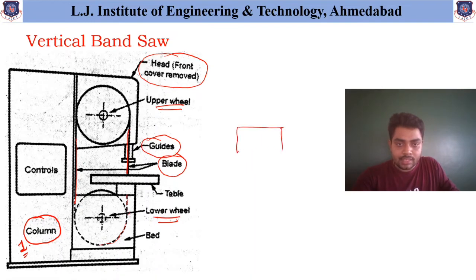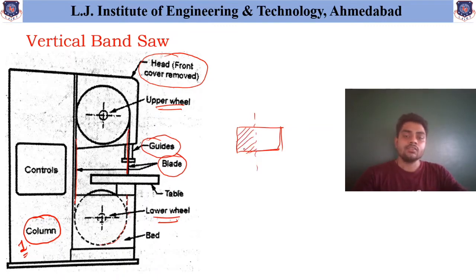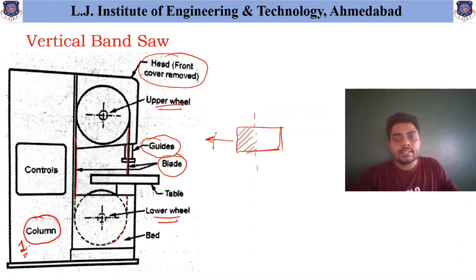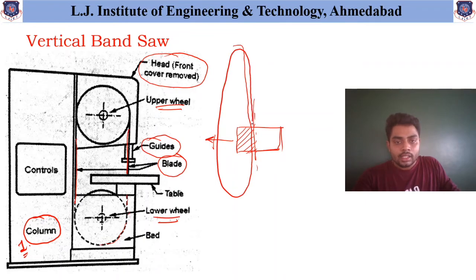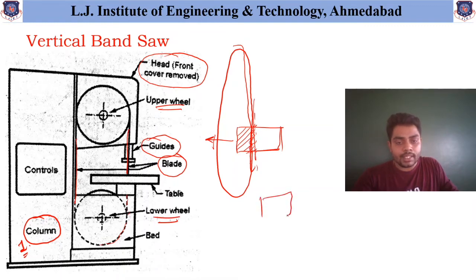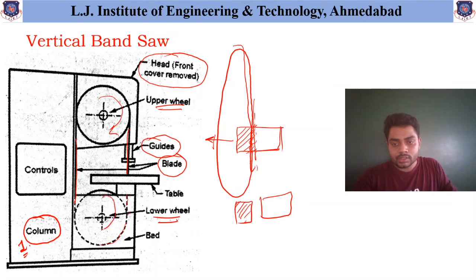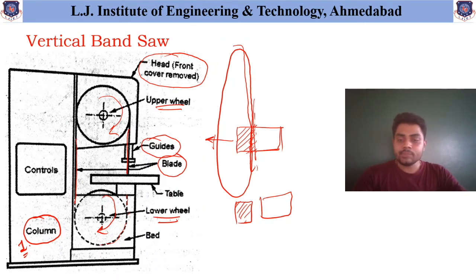Suppose this is the workpiece available and we want to cut material from this particular portion — we want to cut this dashed section. This section is fed towards the machine. When it is fed inside and set up to a certain portion, this blade continuously starts rotating, and the rotation starts removing material from the surface. As the feed is provided, slowly the material is removed from the workpiece, and this block is obtained as a separate portion from the original workpiece.